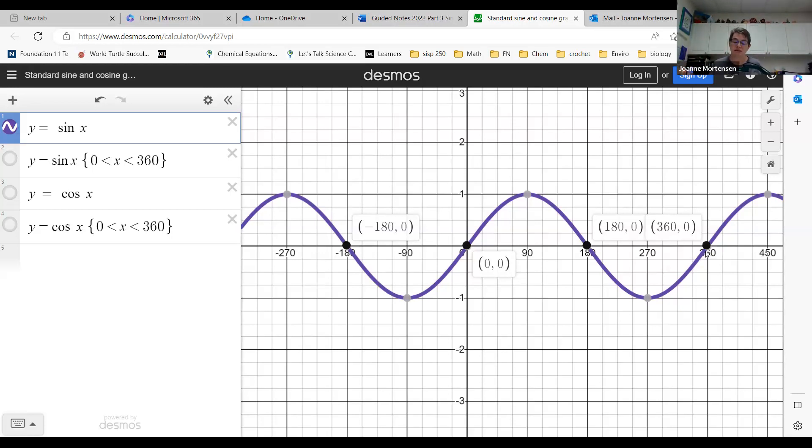Check. Now we need a y-intercept. That's where it crosses the y-axis, and boom, there it is at (0, 0).